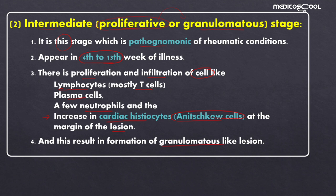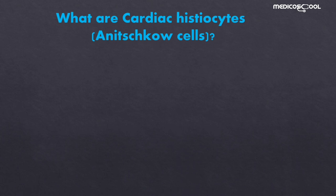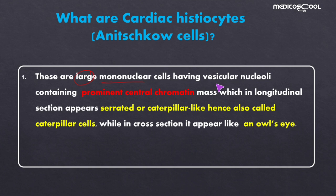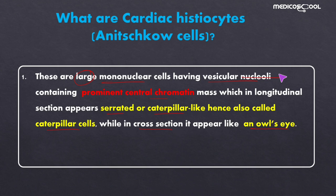Anitschkow cells are also known as cardiac histiocytes. These are large mononuclear cells having a vesicular nucleus containing a prominent central chromatin mass. When seen in longitudinal sections, they appear serrated or caterpillar-like, hence they are also known as caterpillar cells. When seen in cross-section, they appear like an owl's eye.